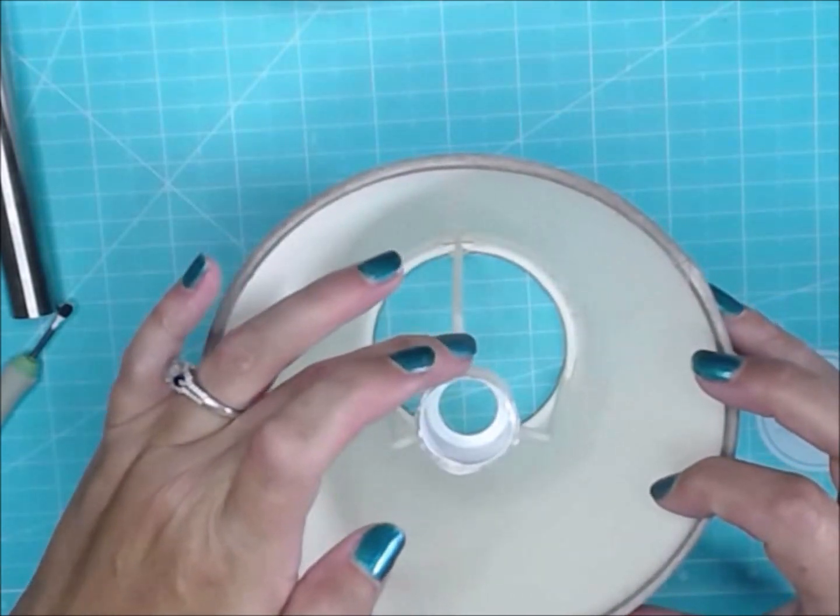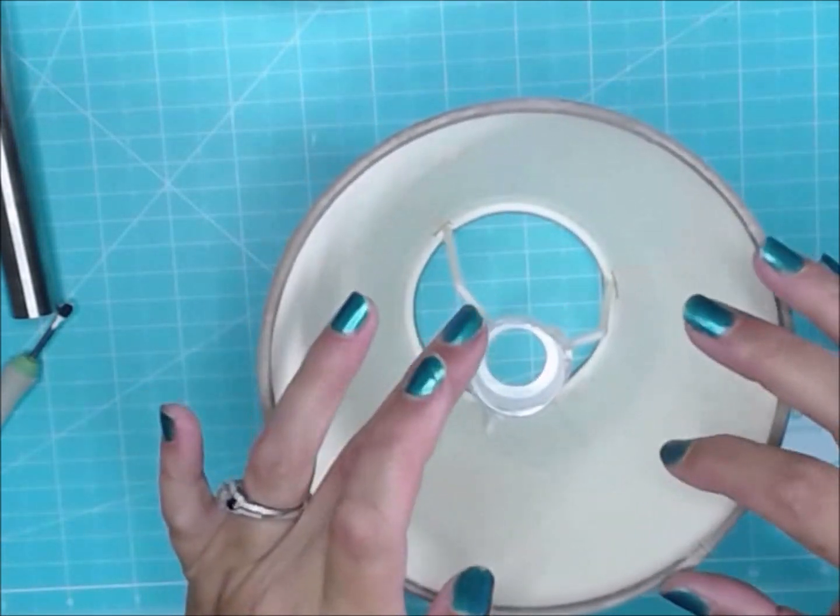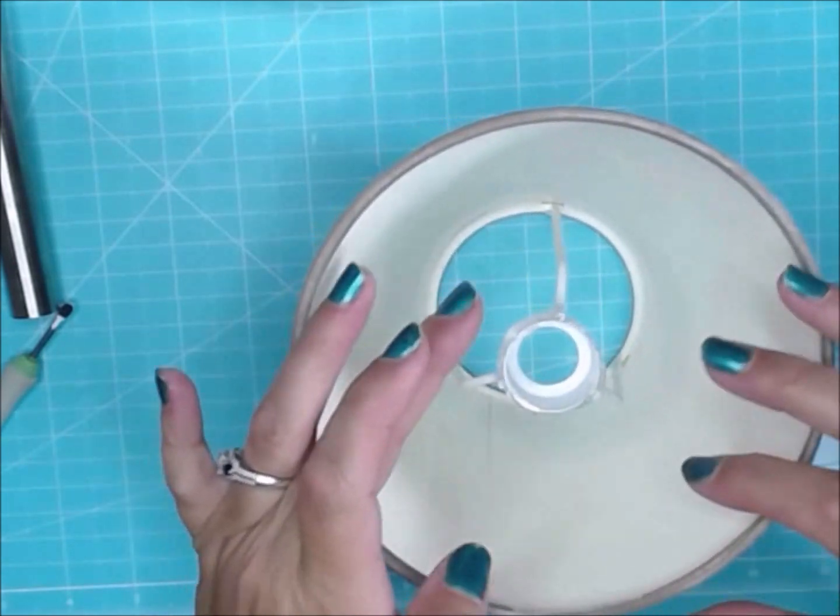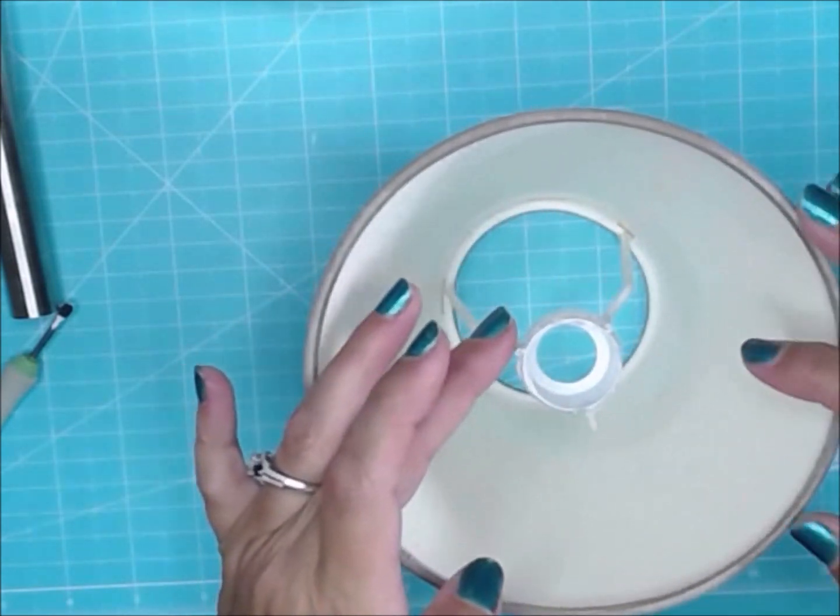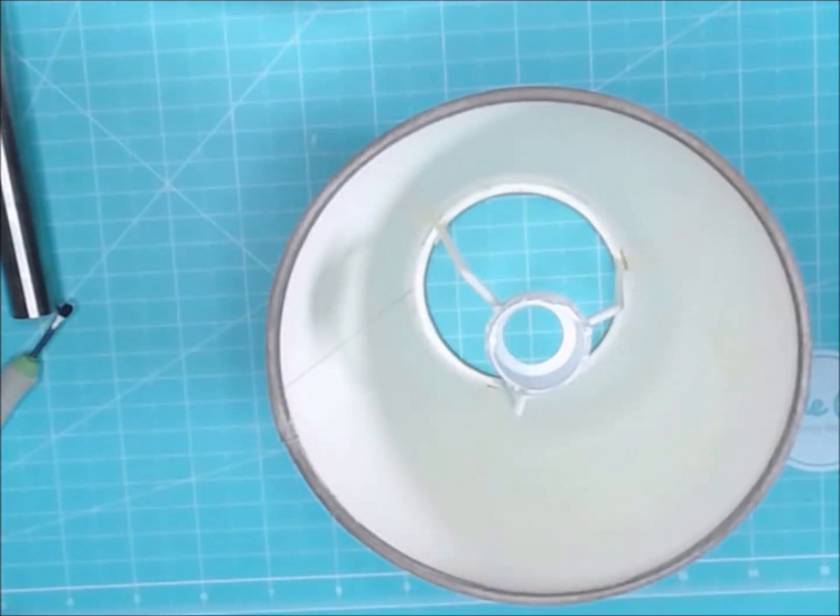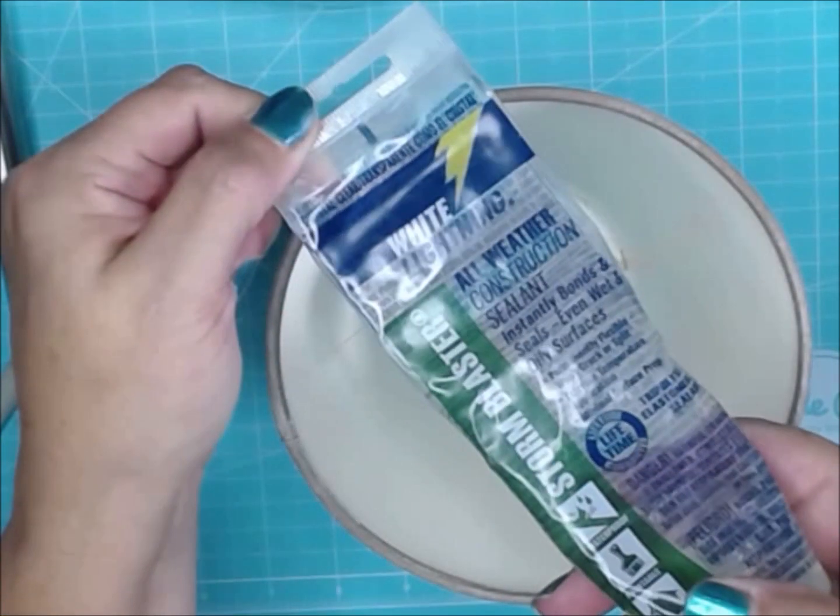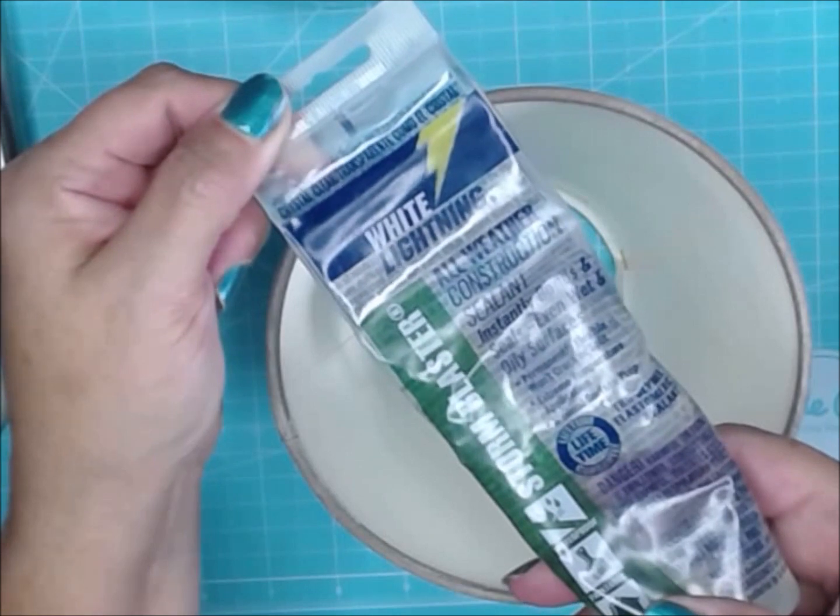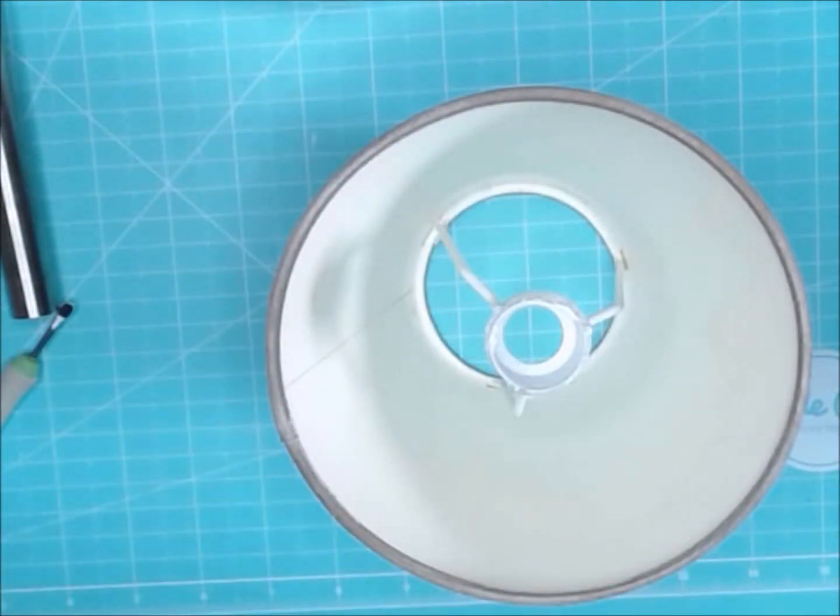For some reason, I didn't film the application of the caulk around the outside base of the candelabra shade, but here I am. I just wet my finger, and I am smoothing down the caulk around the outside rim, and I'm allowing that to dry. Now, I did use, it's called White Lightning, it's a clear caulk. I honestly do not remember if I picked this up at Dollar Tree or not, but you can pick up caulk at Dollar Tree.